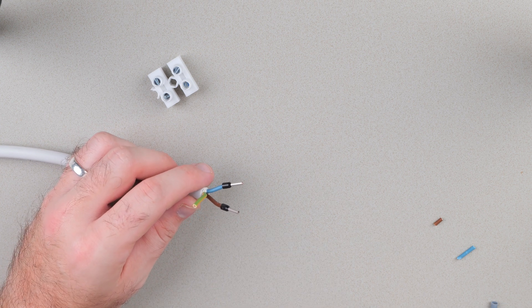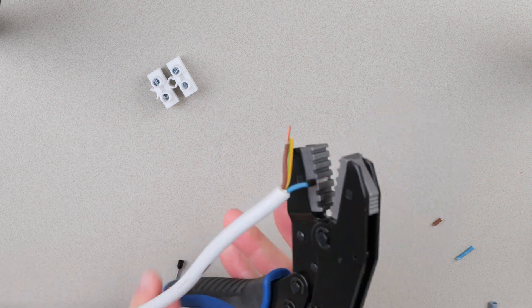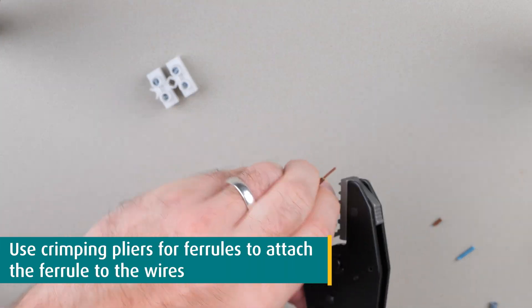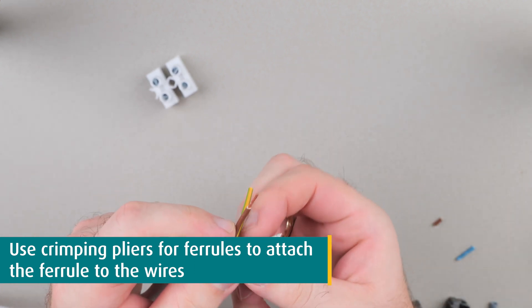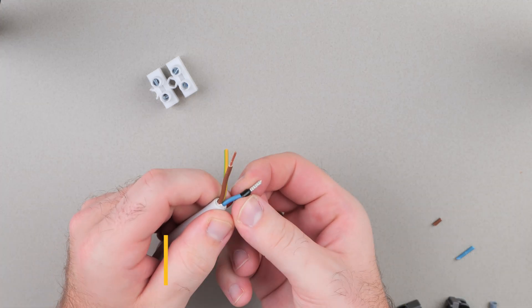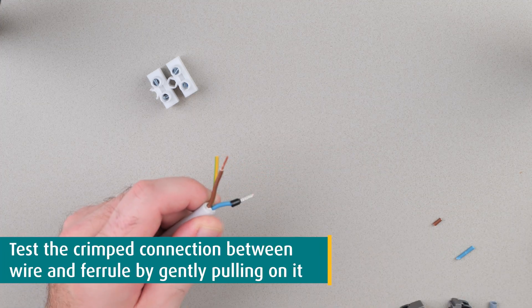Use the correct cross sectional profile of the crimping pliers and press it firmly. If you use automatic pliers like this one, it will lock itself until you've applied sufficient force. When crimped, check the connection by pulling on the ferrule to make sure that it fits tightly and doesn't come off.